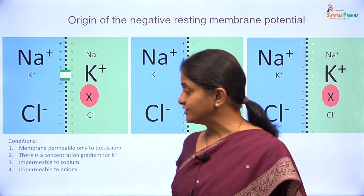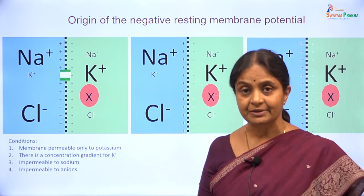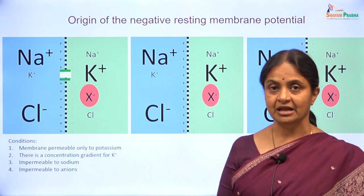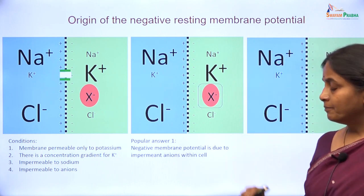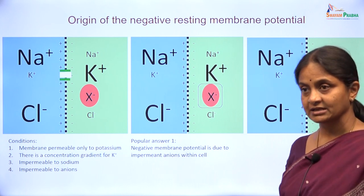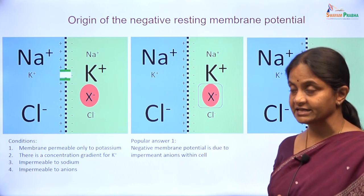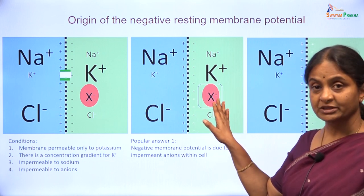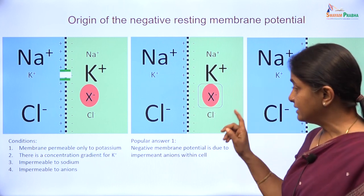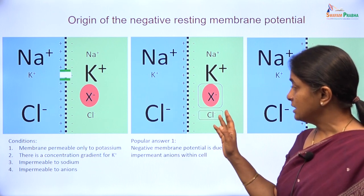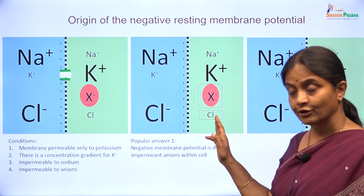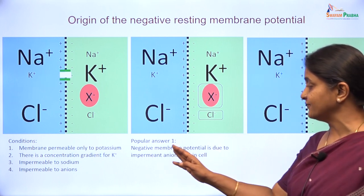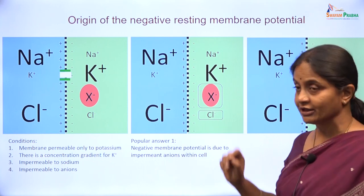Therefore, for a potential difference to exist, there must be a concentration gradient for potassium. Now, some students would counter me with the popular answer that the resting membrane potential is due to impermeant anions — large anions within the cell which cannot cross. At that time, the argument was: even if we replaced the large anions with small anions for which the membrane had transporters, the potential would still exist, and therefore the idea that the negative membrane potential is due to impermeant anions is incorrect.